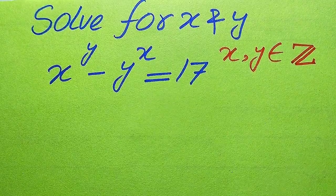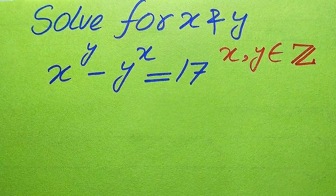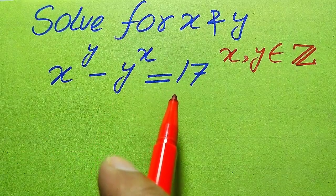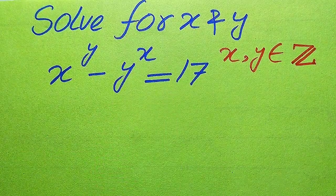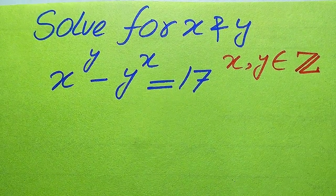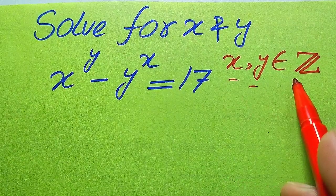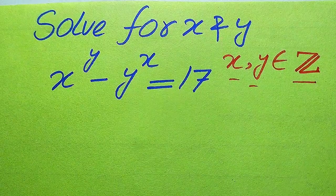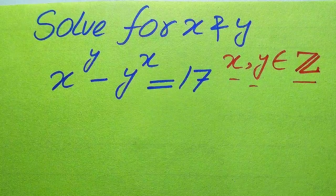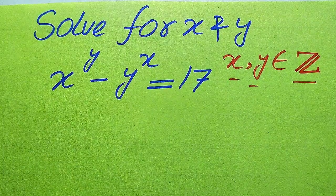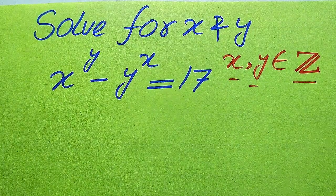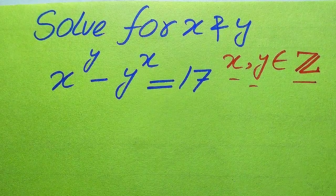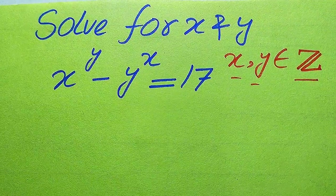Hello everyone. We need to solve this problem for the values of x and y, where x to the power of y minus y to the power of x equals 17. We solve this problem for all integer values of x and y. If you have any other method in mind, please write it in the comment section. Now we move towards the solution.